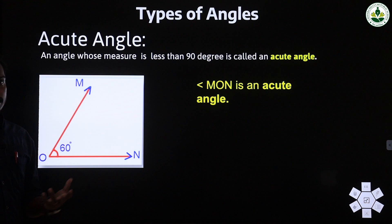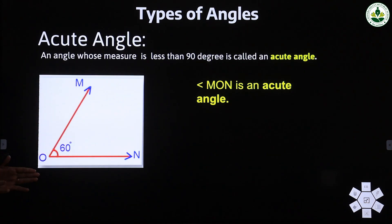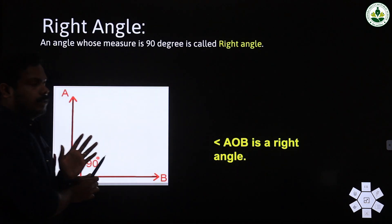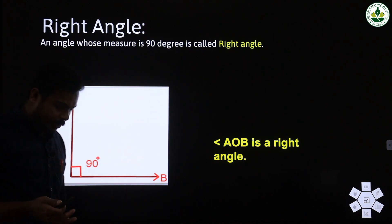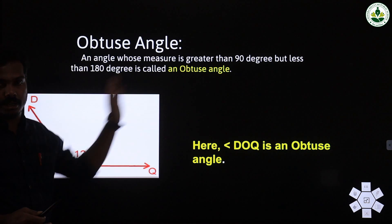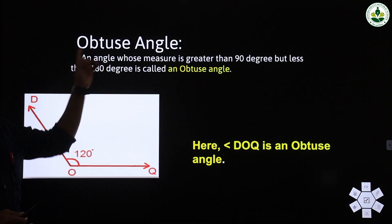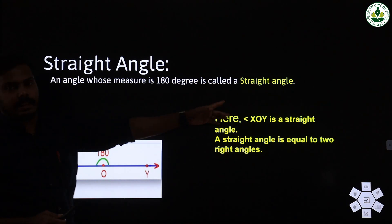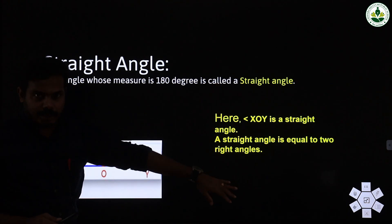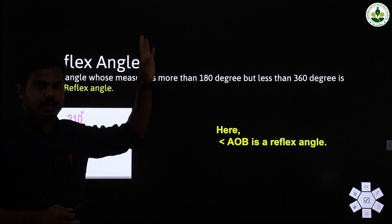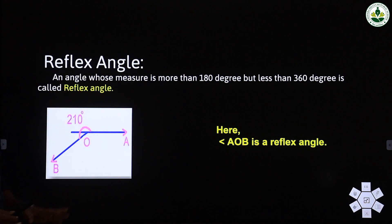To summarize the types of angles: acute angle means less than 90 degrees; right angle is exactly 90 degrees; obtuse angle is more than 90 but less than 180 degrees; straight angle is 180 degrees; and reflex angle is more than 180 but less than 360 degrees.